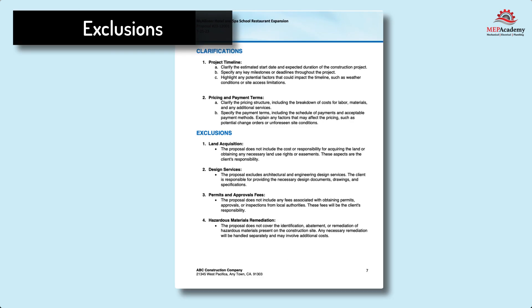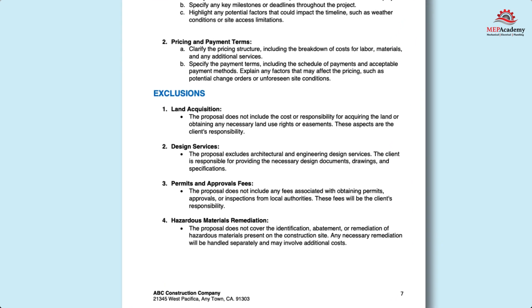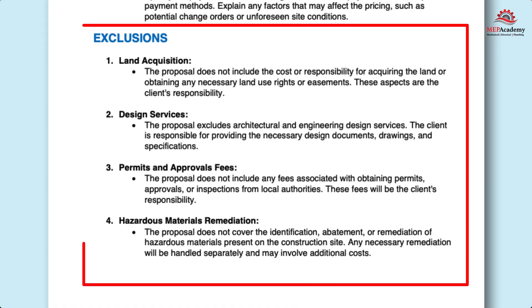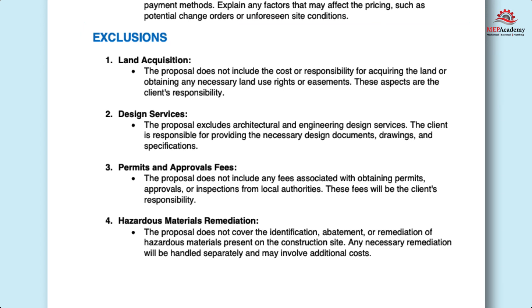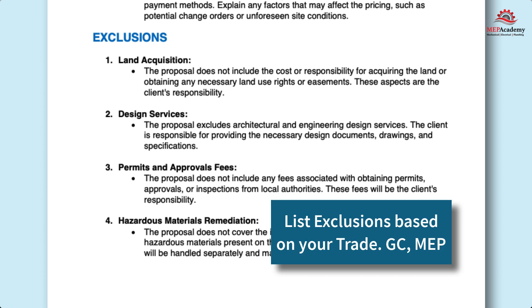Just like clarifications seek to bring everyone to the same understanding of what is being proposed, the Proposal Exclusions section makes it clear what is not included in your proposal. It's important to identify those areas of the construction documents that assign you scope of work that you are not including. When in doubt, be sure to exclude it, but don't go overboard — just list those items that might be attributed to your scope of work that you want to make clear you are not providing any cost for.